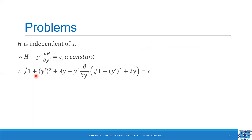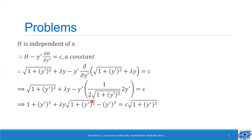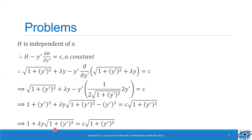So let us substitute for h: we get root of 1 plus y' square plus lambda y minus y' times the partial derivative of root of 1 plus y' square plus lambda y with respect to y' equal to c. On differentiating partially we get 1 over 2 root of 1 plus y' square into 2y'. Simplifying by taking LCM and cross multiplying, we get 1 plus y' square plus lambda y into root of 1 plus y' square minus y' square equal to c into root of 1 plus y' square. The y' square terms cancel and we get 1 plus lambda y into root of 1 plus y' square equal to c into root of 1 plus y' square.